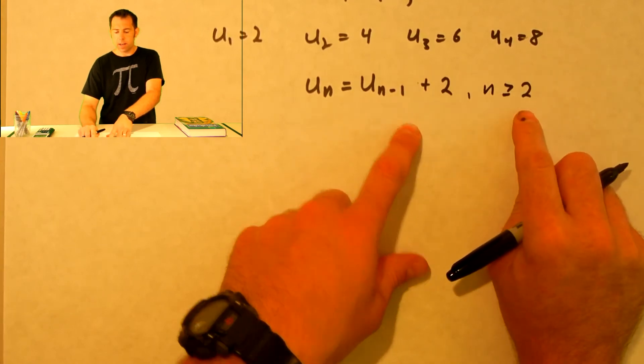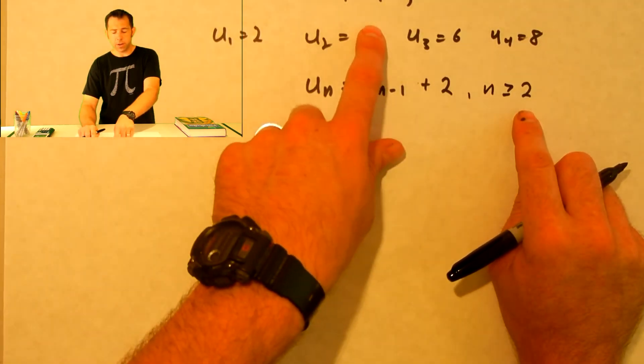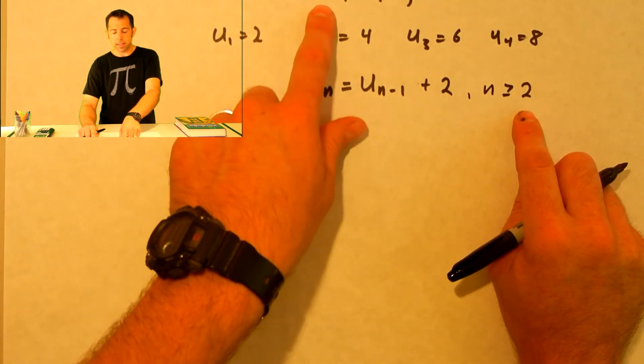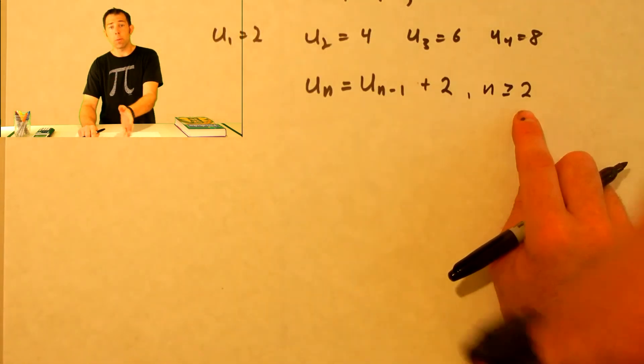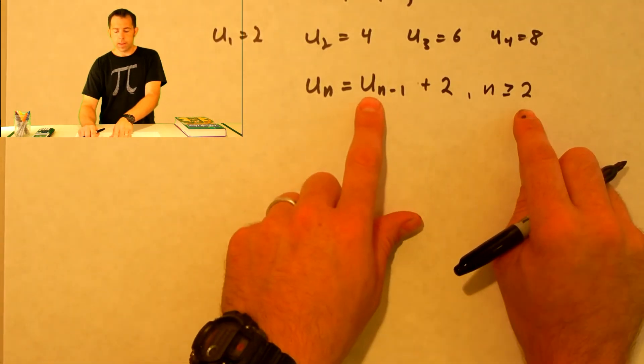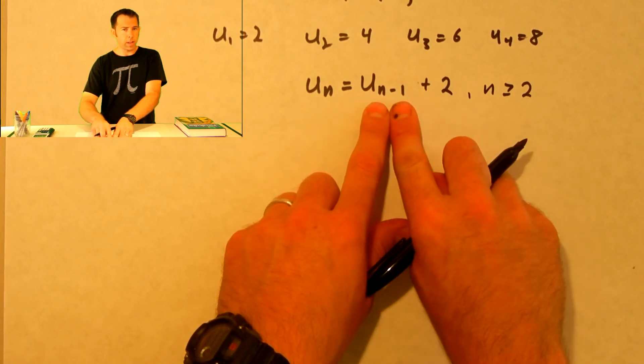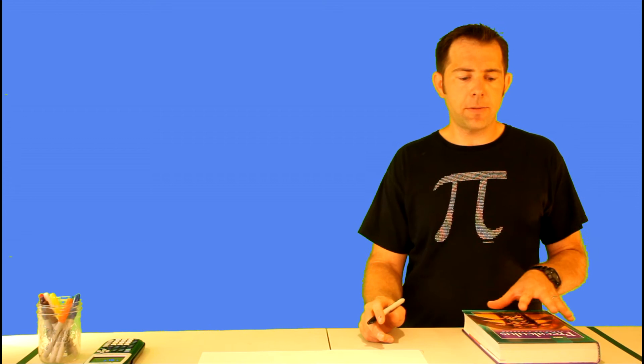N represents the position of the term, so as long as it's the second term or more, the term will always be 2 more than the one that came before it. A recursive formula is a formula used to identify the next term in a sequence based on the preceding term — always based on the preceding value U sub n minus 1. We also have to have a starting value.